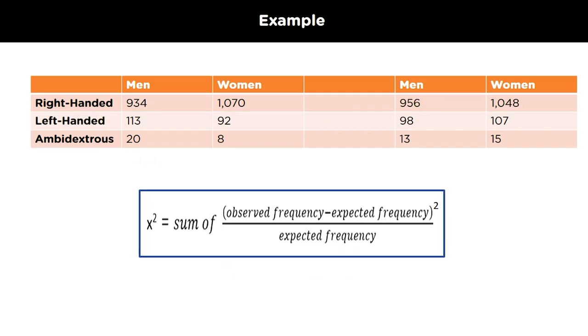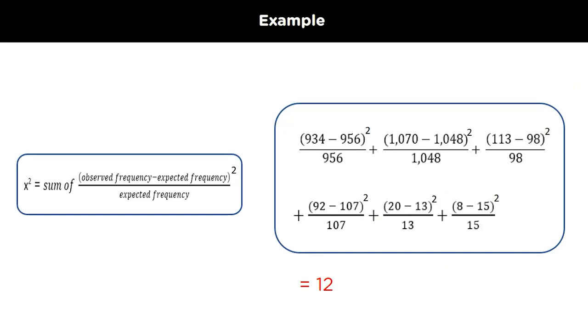After calculating the expected value, we calculate the value of x-square. x-square is calculated by the following formula. Observed frequency minus expected frequency is whole square divided by expected frequency. So, by putting the values in the formula, we get the x-square value to be 12.